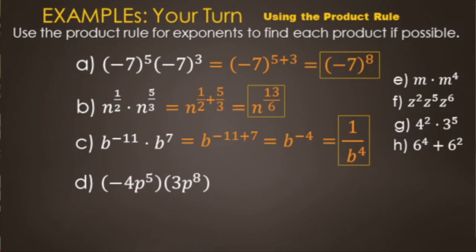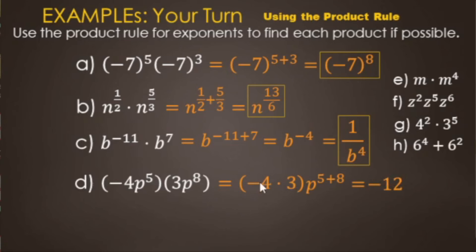Letter D: we have negative four times p to the fifth times three p to the eighth. There's a lot going on, so break it into smaller chunks. First, the number part: negative four times three equals negative twelve. Then the variable part: p to the fifth times p to the eighth — same base, add exponents — gives p to the thirteenth. Final answer: negative twelve p to the thirteenth. When there's a lot going on, do the number part first and the variable part separately.